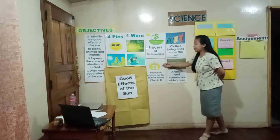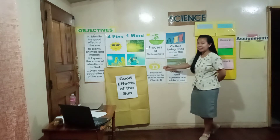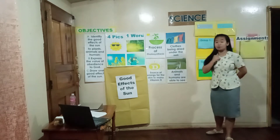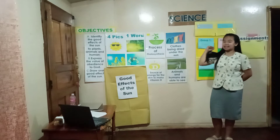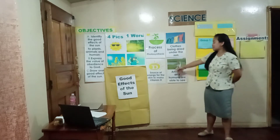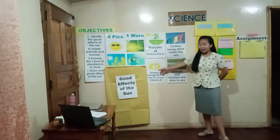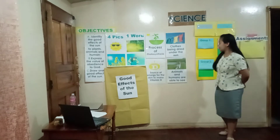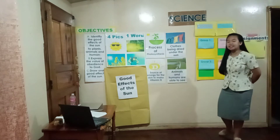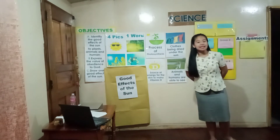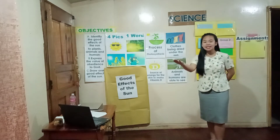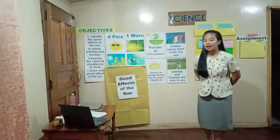And also, the sun gives us vitamin D. It's the source of energy for the skin to make vitamin D, in order for us to have healthy skin. And through the sun, animals and humans can be able to see the things around us, our classmates, and the people around us.